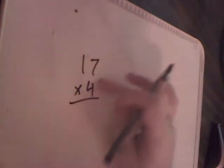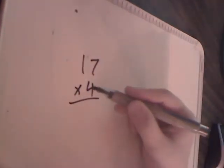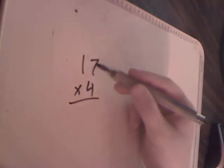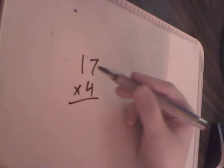Now the first thing that you're going to do is you're going to multiply this 4 times every number up there. So the first thing you do is you start over here at the number closest to the 4 and you move yourself over.